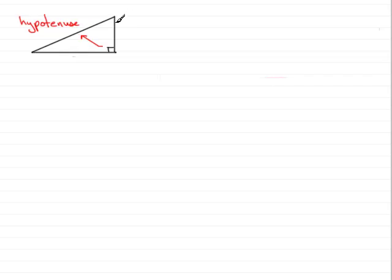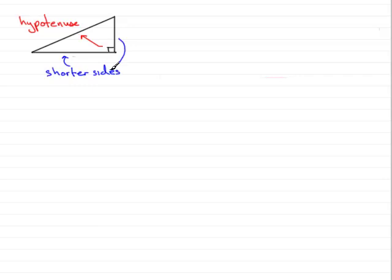The hypotenuse is the longest side of a right-angled triangle. You can see that this side is much longer than these two sides. So it seems appropriate to call these two sides the shorter sides. So we have the longest side, the hypotenuse, which is opposite the right-angle, and the other two sides are called the shorter sides.